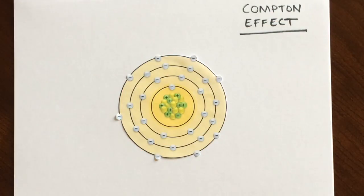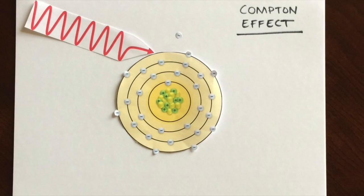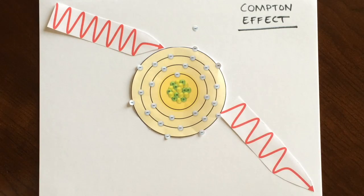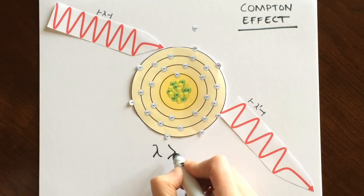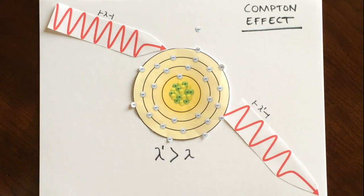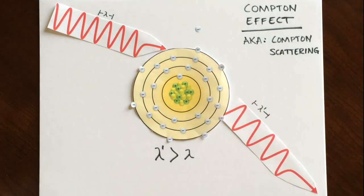The Compton effect refers to interactions between an x-ray photon with an outer shell electron. The photon causes the atom to lose an electron, remember this is called ionization, and the x-ray photon is scattered in a different direction with less energy. This interaction may also be called Compton scattering since the x-ray is now traveling in a different direction.